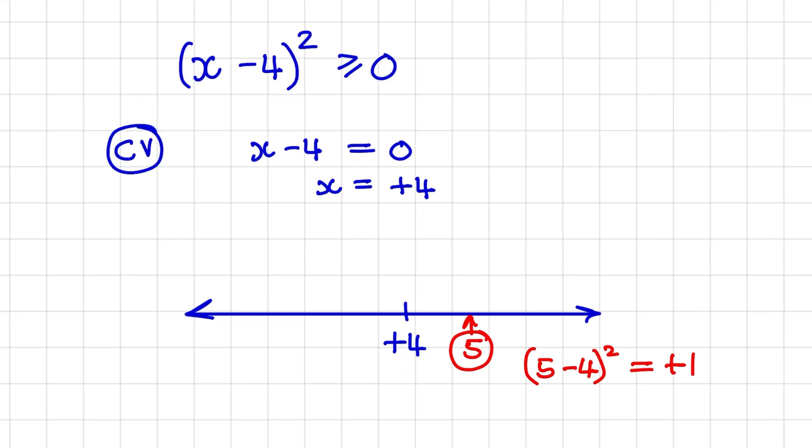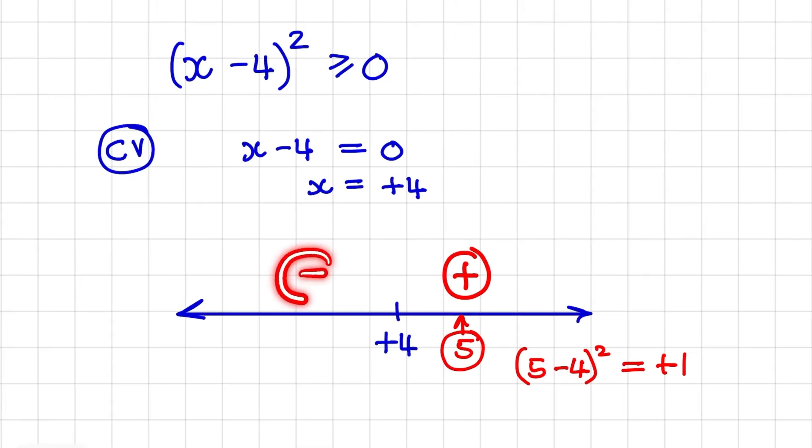So we know that after 4, the equation would be positive. But notice what will happen on the left. It will not automatically be negative, because we only have one critical value. So let's test,